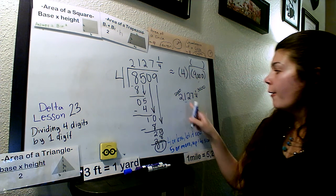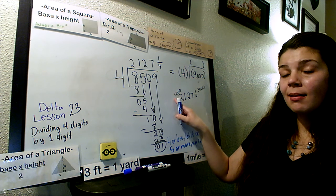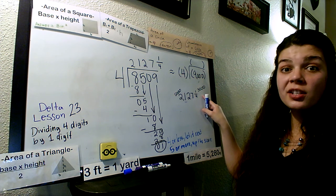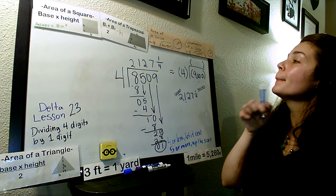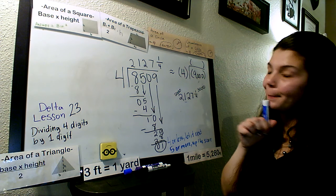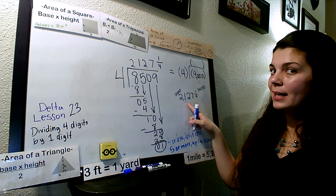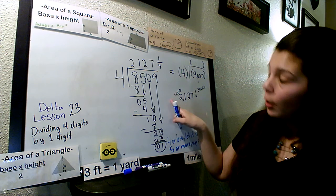I look at my second number here to tell me. Is my second number 4 or less, let it rest, or is it 5 or more up the score? What do you think? 4 or less, let it rest, or 5 or more up the score? Whew!